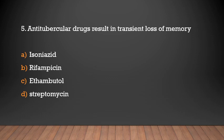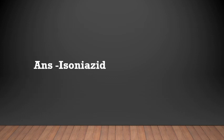Which anti-tubercular drug results in transient loss of memory? Isoniazid, Rifamycin, Ethambutol, or Streptomycin? Answer: Isoniazid. Isoniazid results in transient loss of memory.